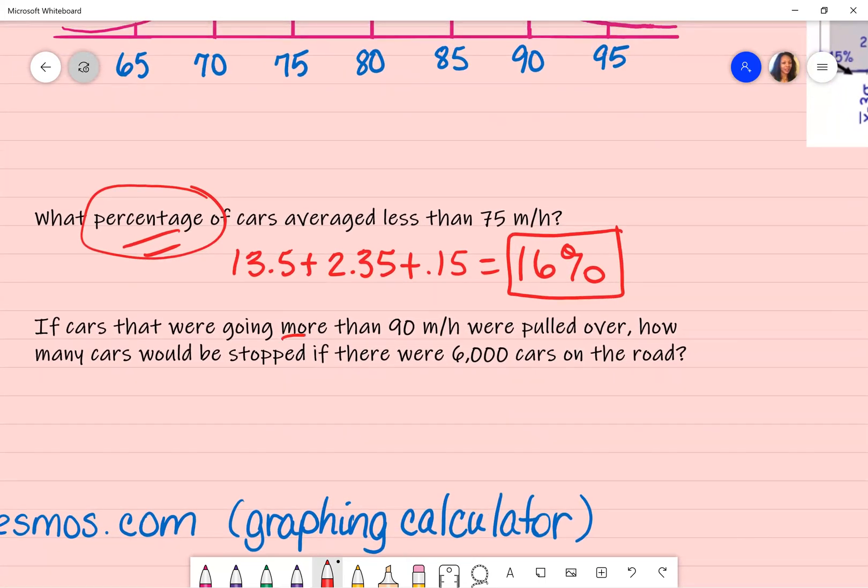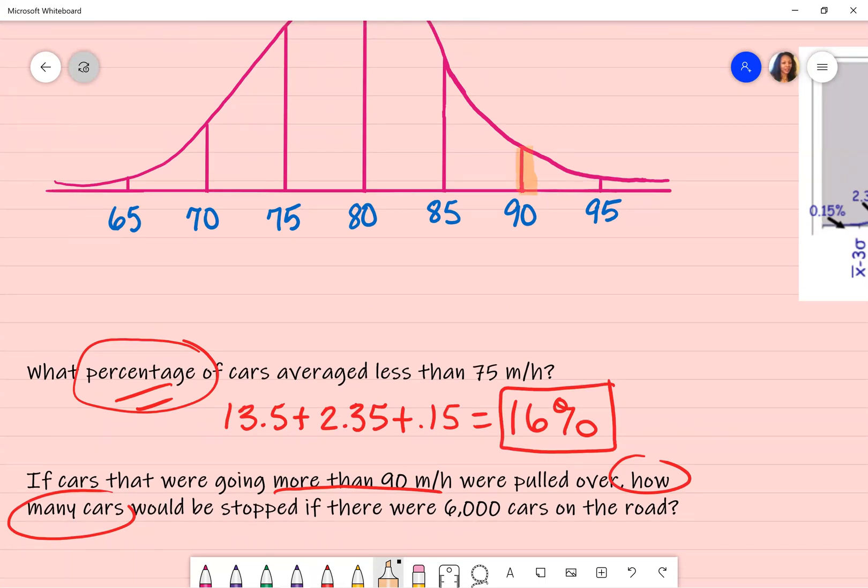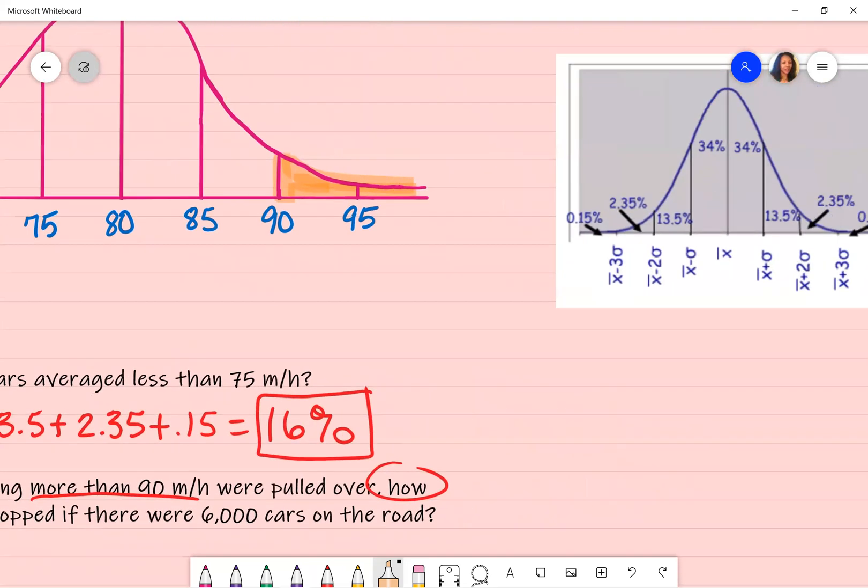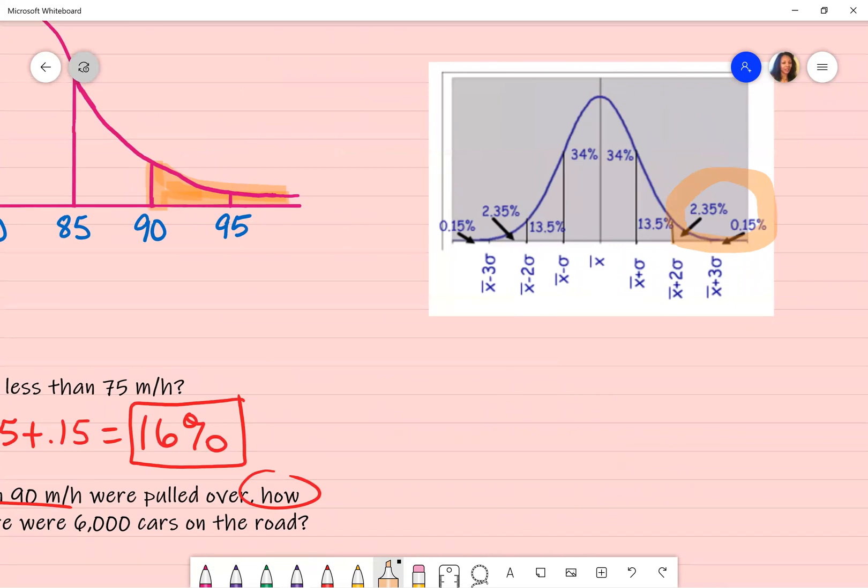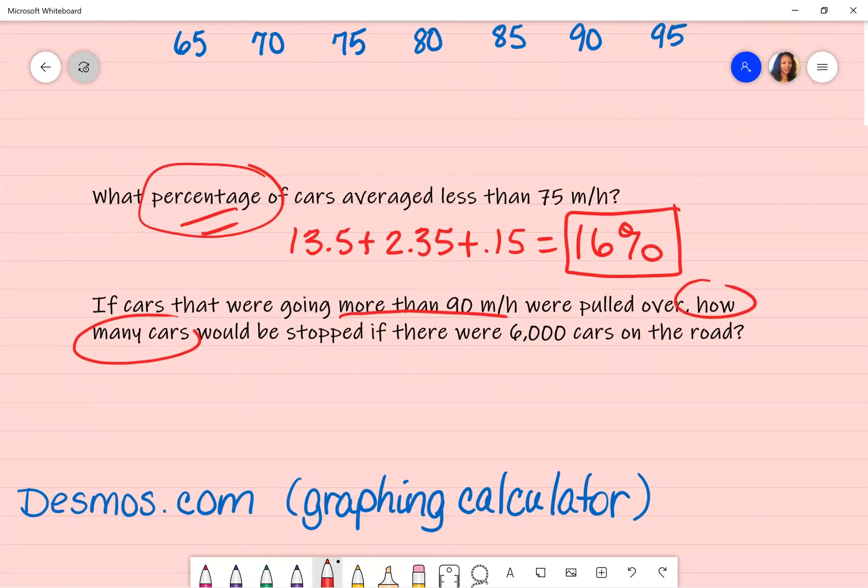If cars that were going more than 90 miles per hour were pulled over, how many cars would be stopped if there were 6,000 cars? So I'm not looking for a percentage this time. So I'm going to go back to my bell curve more than 90 miles per hour. So that's going to be this little portion of my bell curve, which represents this. And if I add that together, it's still that same 2.5%. That's not going to change. So 2.5%. I am not looking for a percentage though. I'm looking for how many cars would be stopped if there were 6,000. So what I have to do is convert that to a decimal. So that is going to be 0.025. And then I take that and I multiply it times the 6,000. When I do that, I end up with the answer of 150 cars.